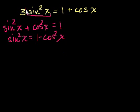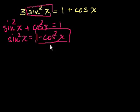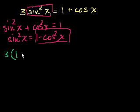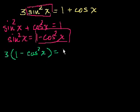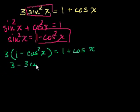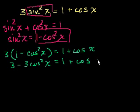So we could substitute this term with that. At least that way everything is in terms of cosine of x. So we get 3 times sine squared of x — we just showed that sine squared of x is the same thing as 1 minus cosine squared of x — equals 1 plus cosine of x. Simplifying: 3 minus 3 cosine squared of x is equal to 1 plus cosine of x.